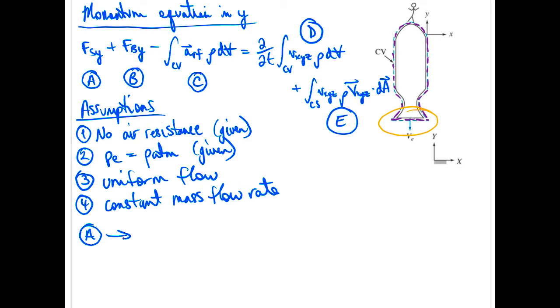We're told there's no air resistance. We're told the pressure's atmospheric everywhere, including across the exit point there, means all our surface forces have to be zero.